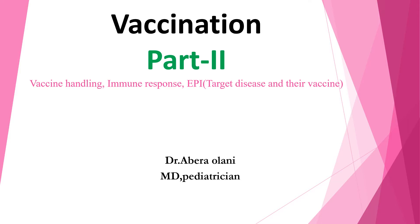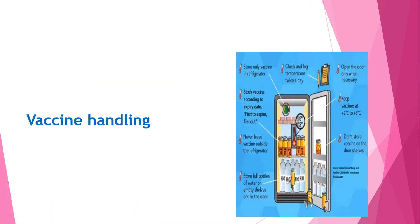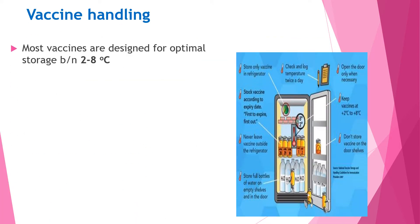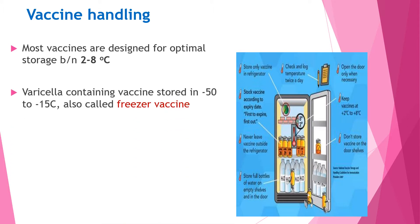Welcome again everyone. Today I will continue the second part of vaccination. In this session I will talk about vaccine handling, immune response, and EPI schedule, the target diseases, and their vaccines. To start from vaccine handling, most vaccines are designed for optimal storage between two to eight degrees Celsius. Varicella-containing vaccines are stored at minus 50 to minus 15 degrees Celsius.